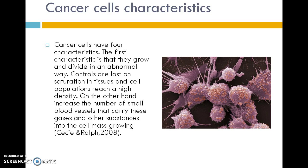Cancer cells have four characteristics. The first characteristic is that they grow and divide in abnormal ways. Controls are lost on the density in tissues and cell populations, which reach a high density. On the other hand, there is an increase in the number of small blood vessels that carry gases and other substances into the growing cell mass.